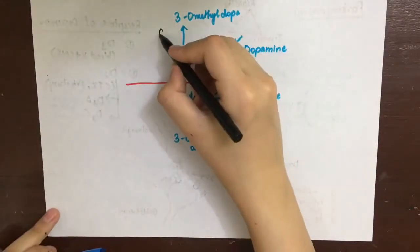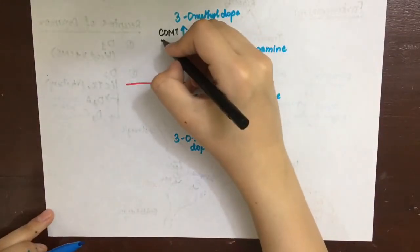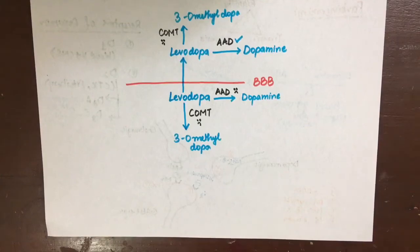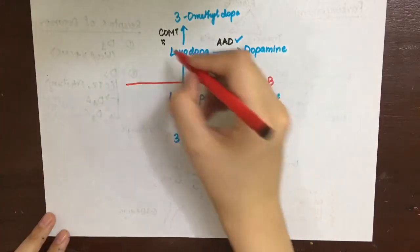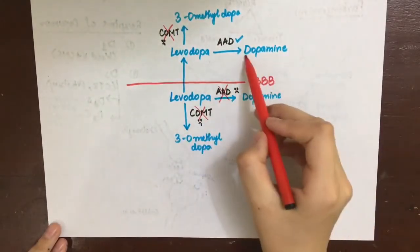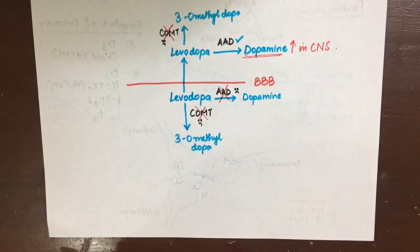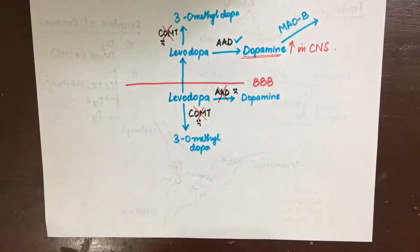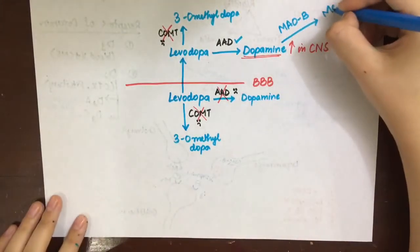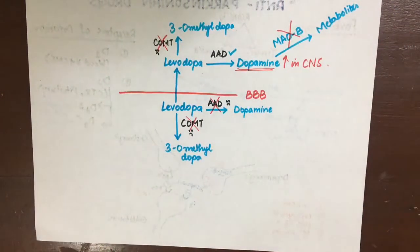3-O-methyl dopa is a partial agonist and, in the presence of dopamine, acts as an antagonist. Therefore, we have two problems: peripheral AAAD enzyme and COMT enzyme in both the CNS and periphery. We need to inhibit peripheral AAAD, as well as central and peripheral COMT. Additionally, dopamine in the CNS is degraded by MAO-B enzyme into metabolites, so we also need to inhibit MAO-B.